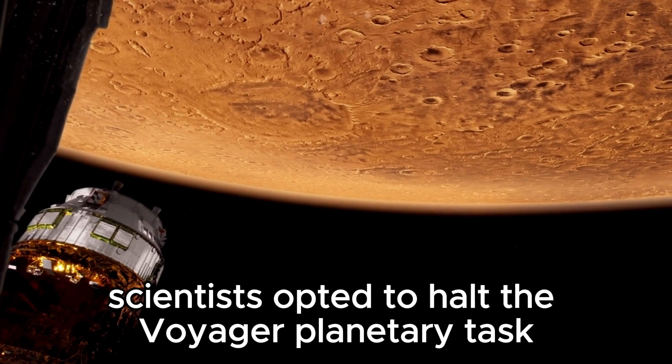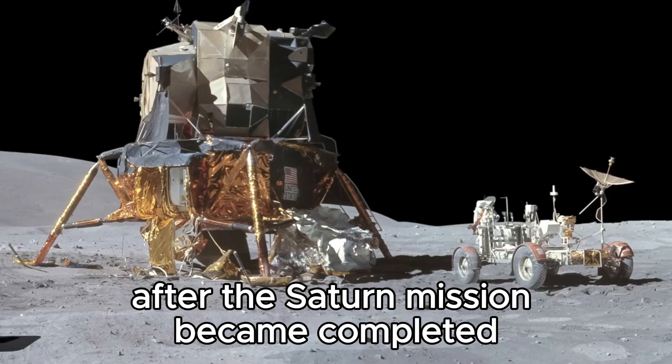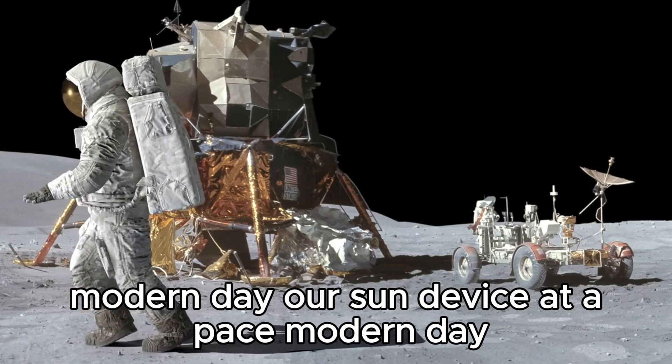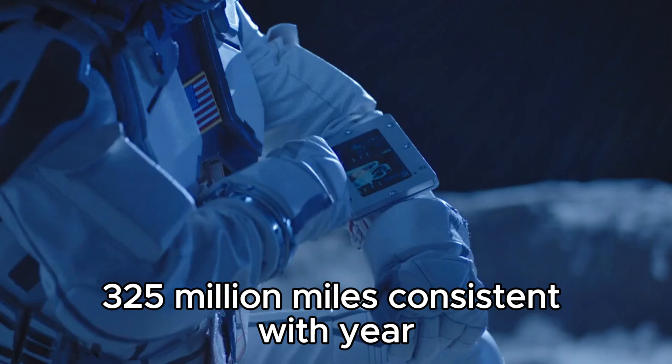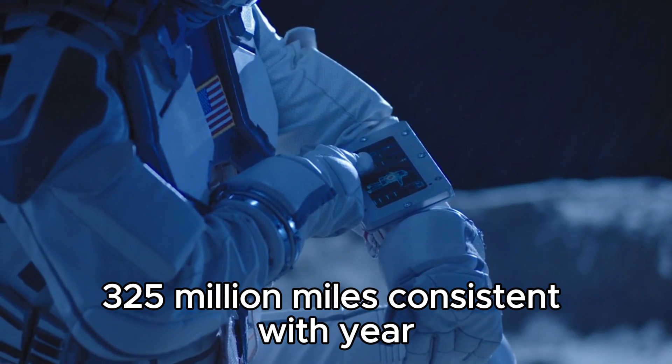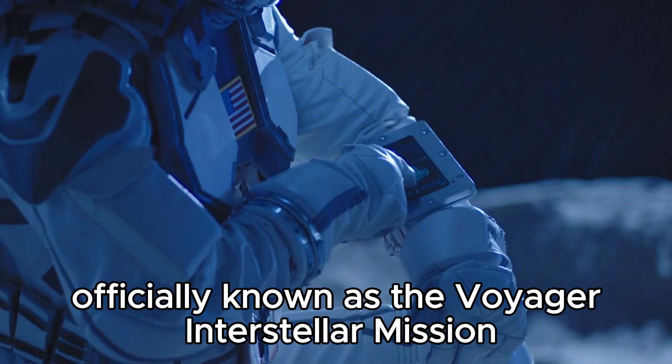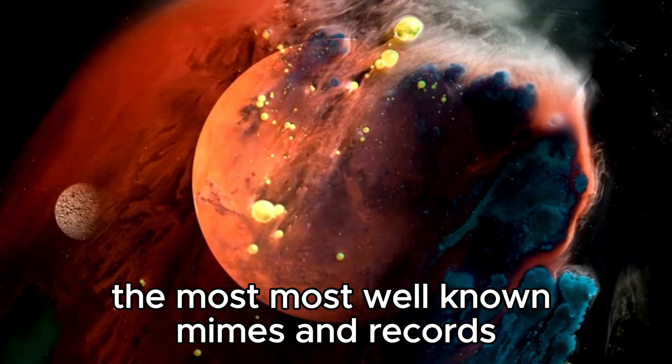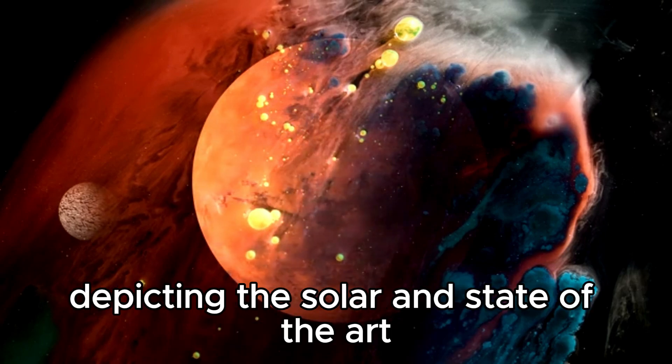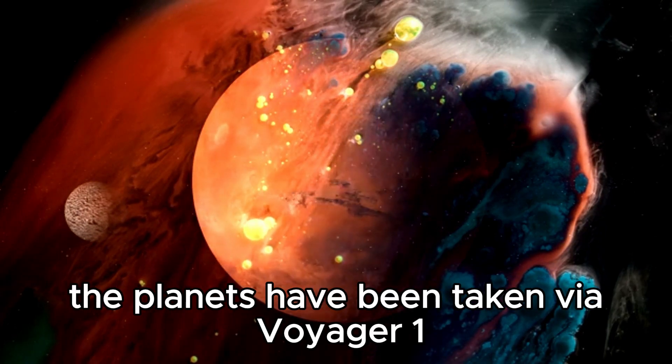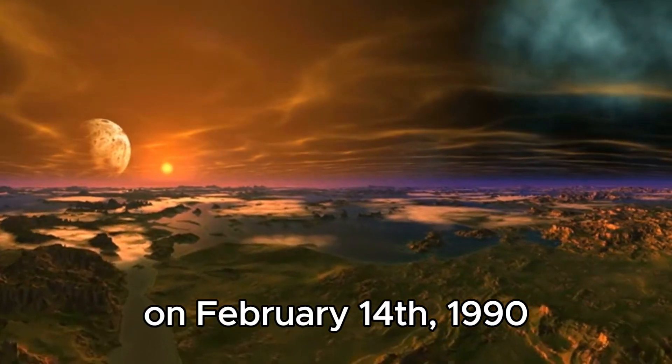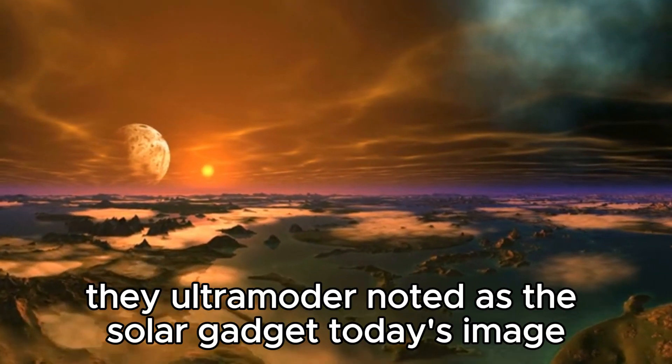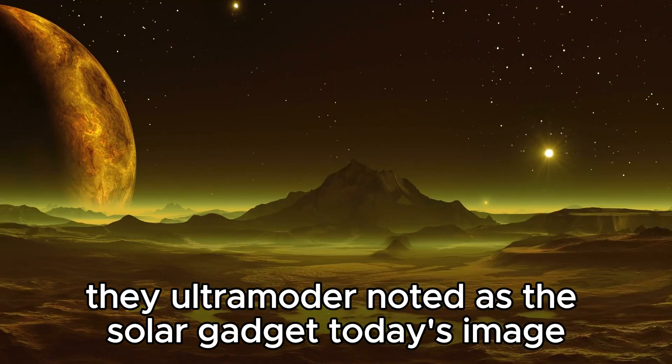Scientists opted to halt the Voyager planetary task after the Saturn mission was completed and sent both Voyager 1 and Voyager 2 out towards the edge of our solar system at a pace of 325 million miles per year. In January 1990, the new mission, officially known as the Voyager Interstellar Mission, got underway. The most famous images and data, depicting the solar system and its planets, were taken by Voyager 1 on February 14, 1990, while it was 6 billion kilometers from the Sun. They are noted as the solar system family portrait.